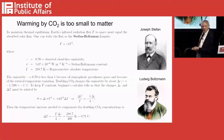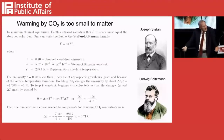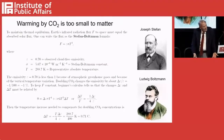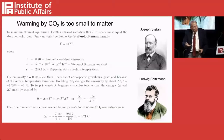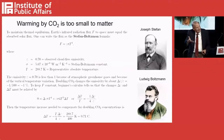Stefan discovered this graduate student, Boltzmann. And he said to Boltzmann, 'I have measured how radiation goes into space, and it goes as the fourth power of the temperature.' That's a huge effect, because if you double the temperature, you increase radiation by 2 to the fourth — by 16. So it's an amazing factor.